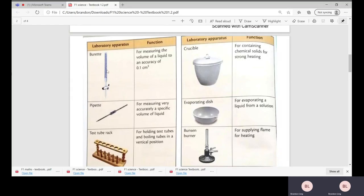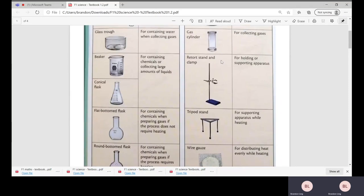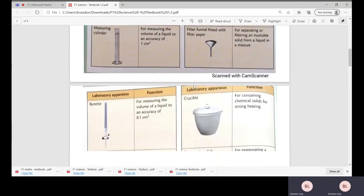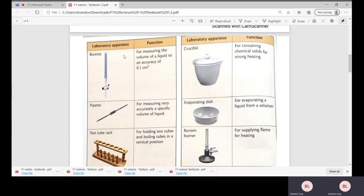Next page we have the burette. Burette is to be held on the retort stand here for an extended period of experiment, for measuring the volume of a liquid to an accuracy of 0.1 cm³. And you have the crucible, which is usually for heating purposes.